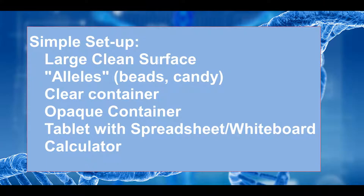For this activity, you will need a large, flat, clean surface. The alleles can be any object where you have four colors of 15 each. Candy is usually the best, but beads will work too. You will also need a clear container, an opaque container, and a tablet with a spreadsheet application. If you don't have a tablet, a whiteboard and a calculator will be needed.